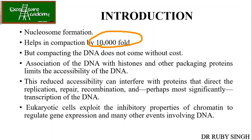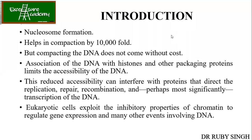Nothing comes free — there is always a cost. The association of DNA with histones and other packing proteins will limit the accessibility of the DNA. Since the DNA is wrapped with protein, it is no longer free for certain functions. For example, the DNA cannot undergo replication or transcription. This reduces accessibility for replication, repair, recombination, and transcription. So when DNA is in compacted chromosome form, none of these functions can take place — this is the cost the DNA pays when getting compacted.